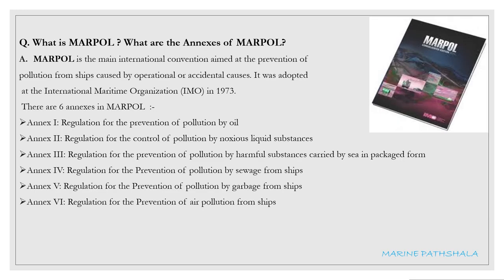The next question is: what is MARPOL and what are the annexes of MARPOL? MARPOL is the main international convention aimed at the prevention of pollution from ships caused by operational or accidental causes. It was adopted at the International Maritime Organization in 1973. There are six annexes.